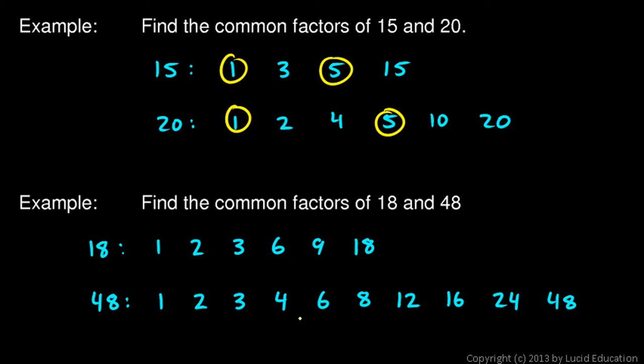Now the numbers that are common to both lists are 1, 2, 3, and 6 is in both lists. So those are the common factors of 18 and 48.